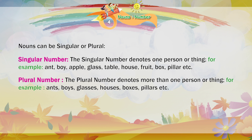Plural number. The plural number denotes more than one person or thing. For example: ants, boys, glasses, houses, boxes, pillars, etc.